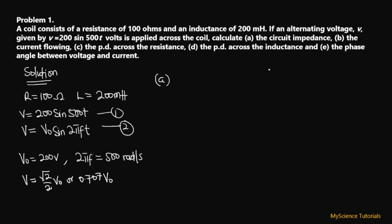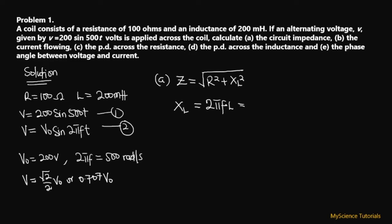The first thing we've been asked to find is the impedance of the circuit. We know that impedance in an RL circuit equals the square root of resistance squared plus inductive reactance squared. We have the resistance but we need to find XL first. From our previous tutorial, XL = 2πfL, where f is frequency and L is inductance.